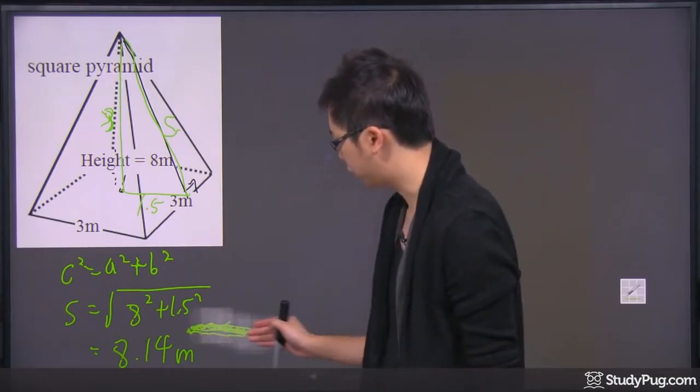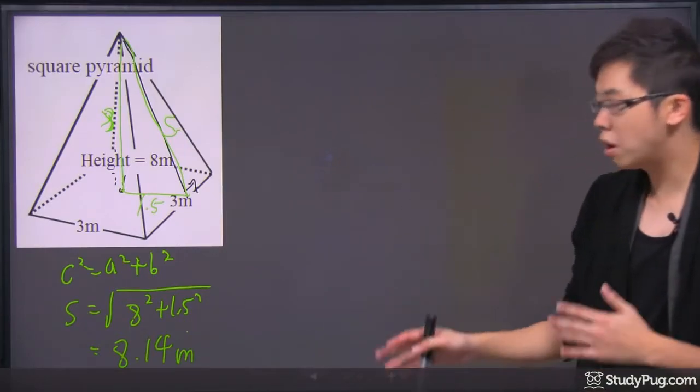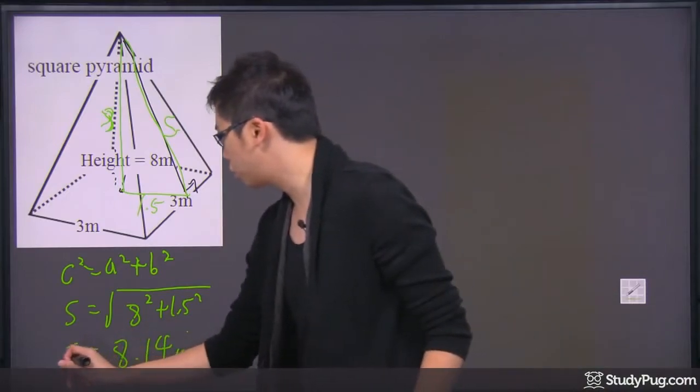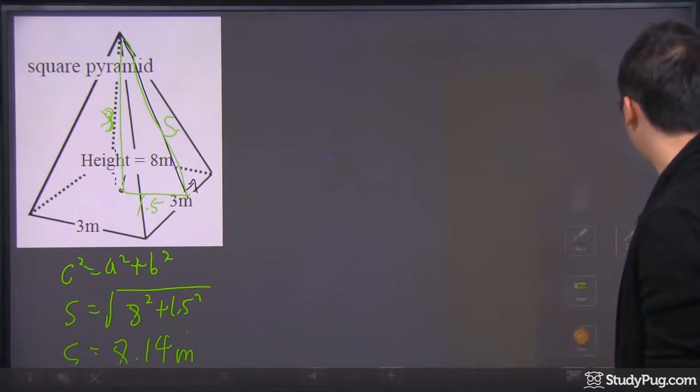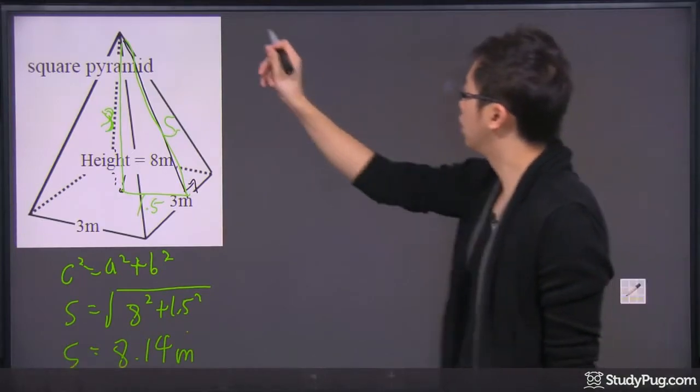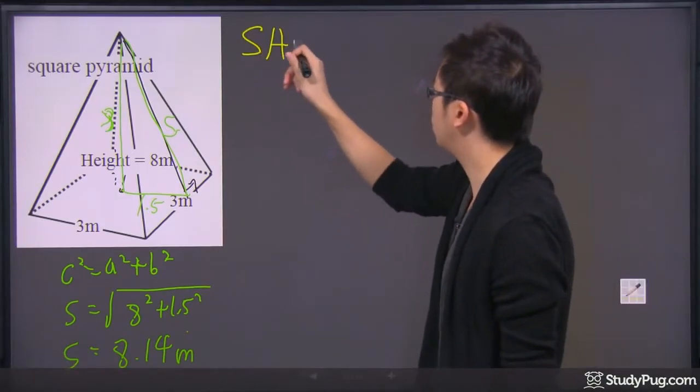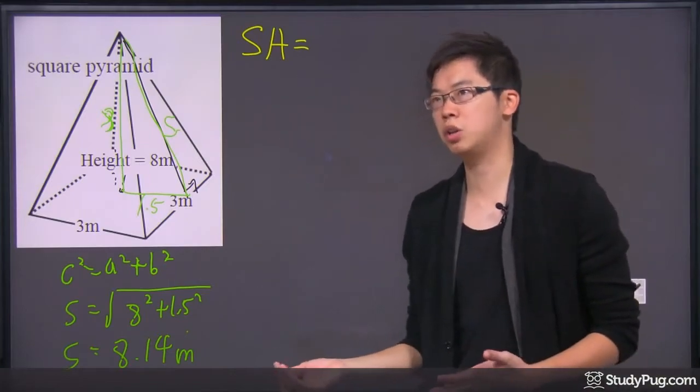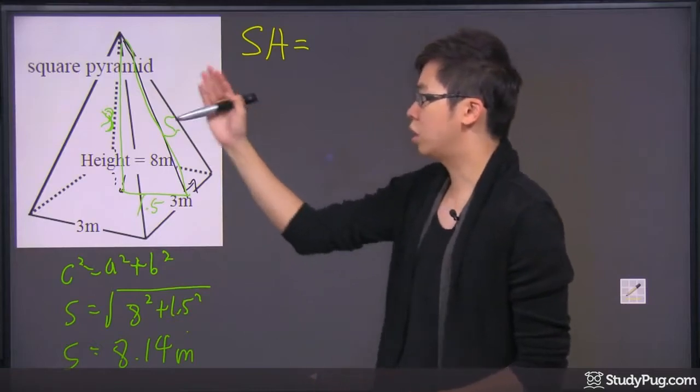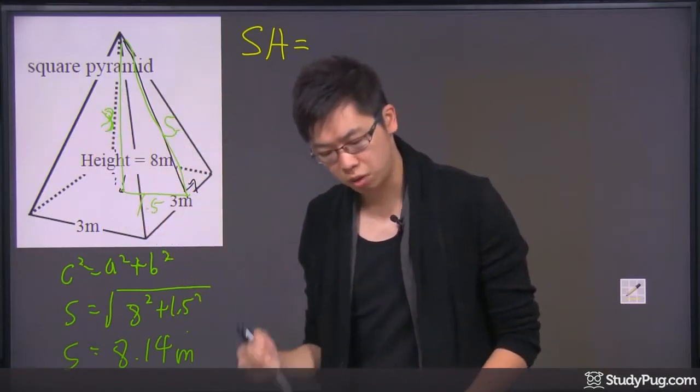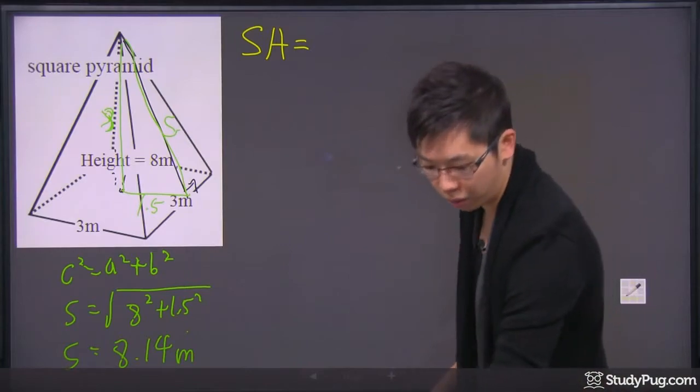So now we have the slanted side now. What we're going to do, we can actually go ahead and calculate the surface area and the volume. So, coming down to the surface area, we do have an equation. It's just like simple equations. The bottom piece and the 4 equal sides of the pyramid, right? So, let's do the bottom piece first.